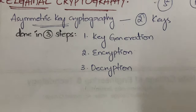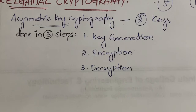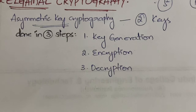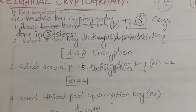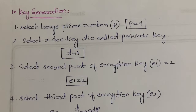The three steps are: first is key generation, then encryption, then decryption. In the first step you will be generating the private and public keys. Then using those keys you will be doing the encryption and decryption process in the subsequent steps. Let us now see the first step — key generation.